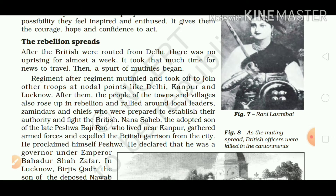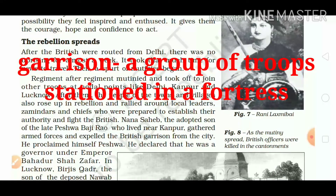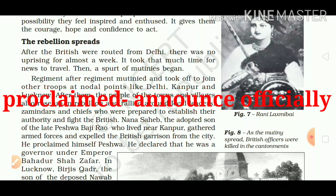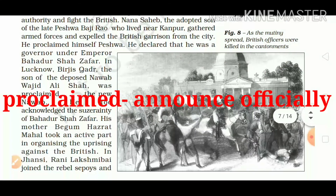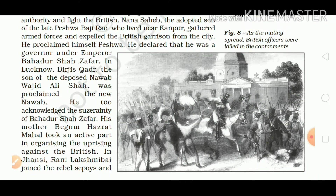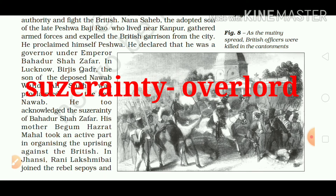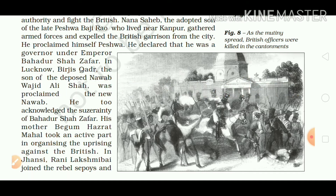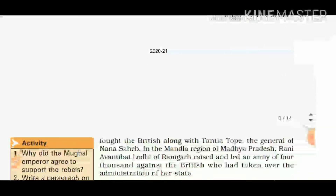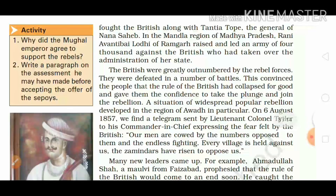Nana Sahib, the adopted son of the late Peshwa Baji Rao, who lived near Kanpur, gathered armed forces and expelled the British garrison from the city. He proclaimed himself Peshwa and declared that he was a governor under Emperor Bahadur Shah Zafar. In Lucknow, Birjis Qadr, the son of the deposed Nawab Wajid Ali Shah, was proclaimed the new Nawab. He too acknowledged the suzerainty of Bahadur Shah Zafar. His mother, Begum Hazrat Mahal, took an active part in organizing the uprising against the British. In Jhansi, Rani Lakshmi Bai joined the rebel sepoys and fought the British along with Tatya Tope, the general of Nana Sahib.